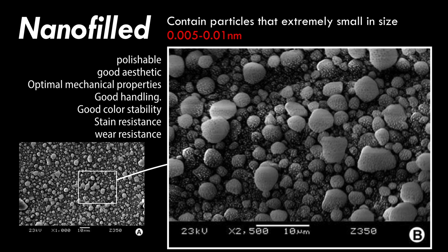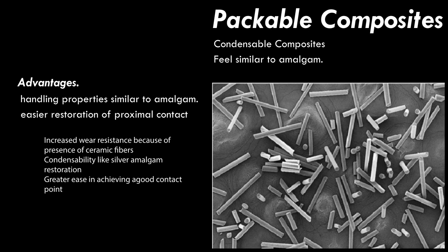In nano-filled composites, all particles are of true nano size in the nanometer range. There are several purposes for incorporating nano-fillers. First, the size of the nanomeric particles is below the wavelength of visible light (400 to 800 nanometers), so when particle sizes are smaller than visible light, it provides the opportunity to create a highly translucent material — which is a significant advantage of nano-fillers.